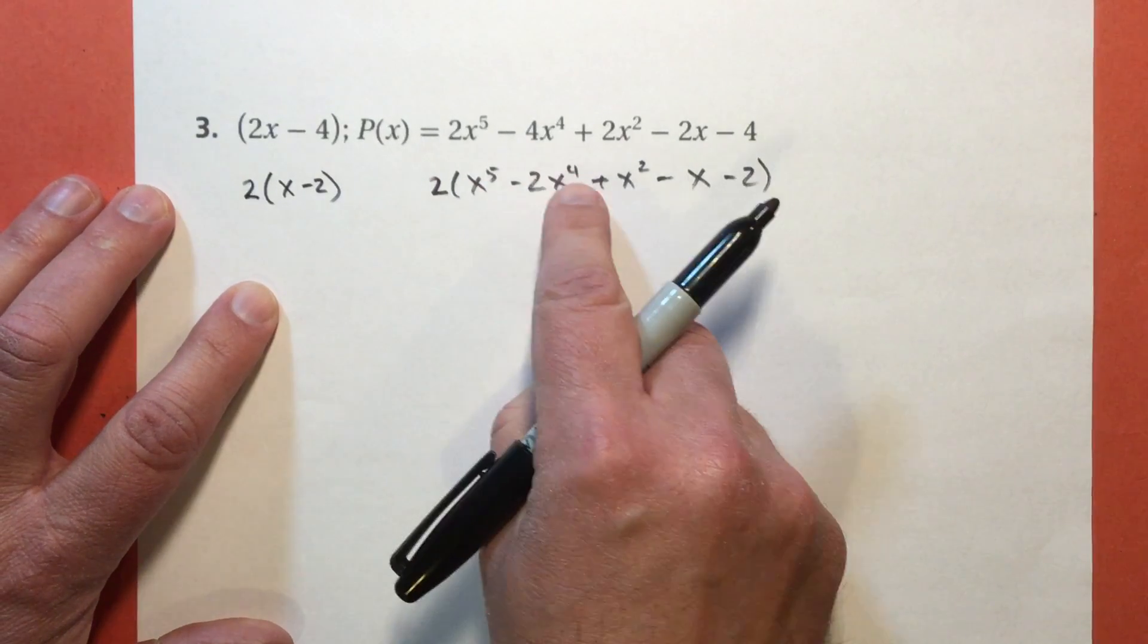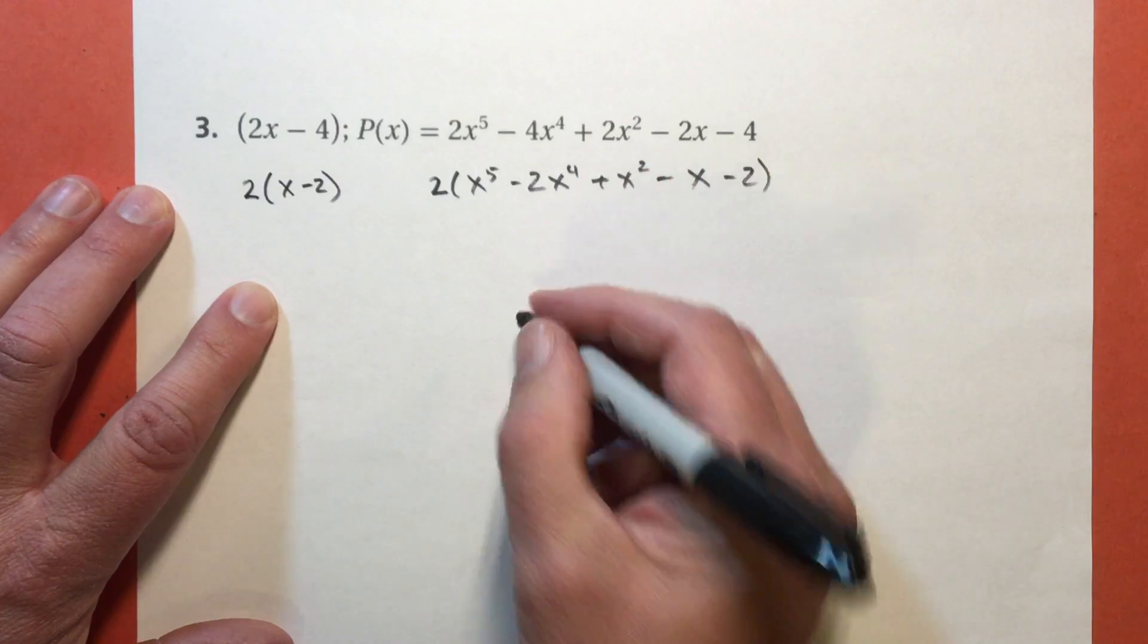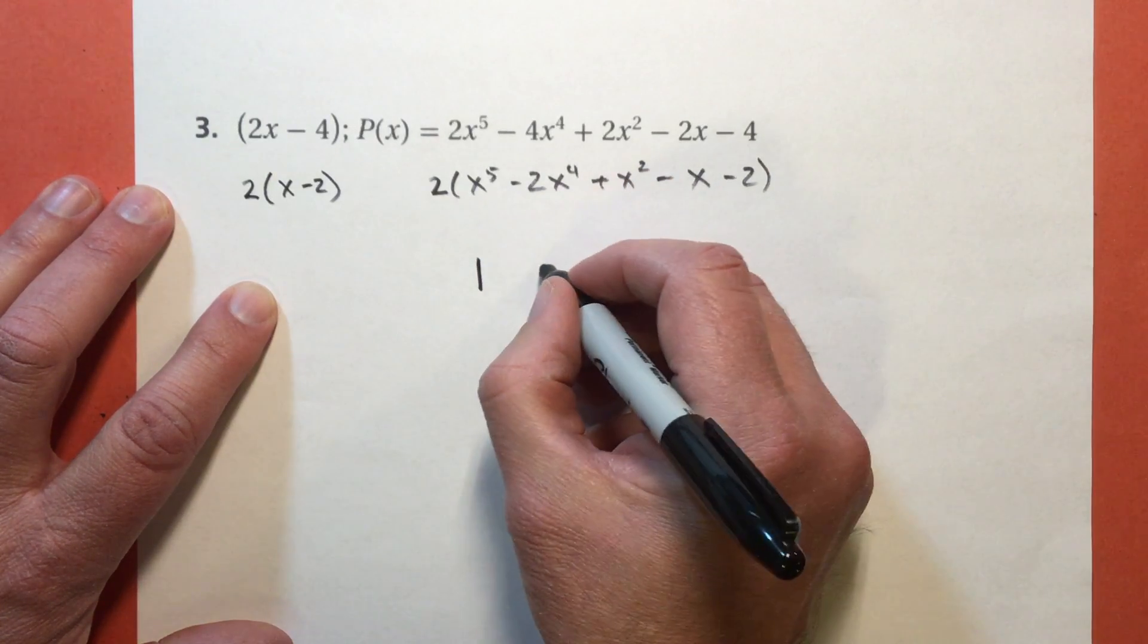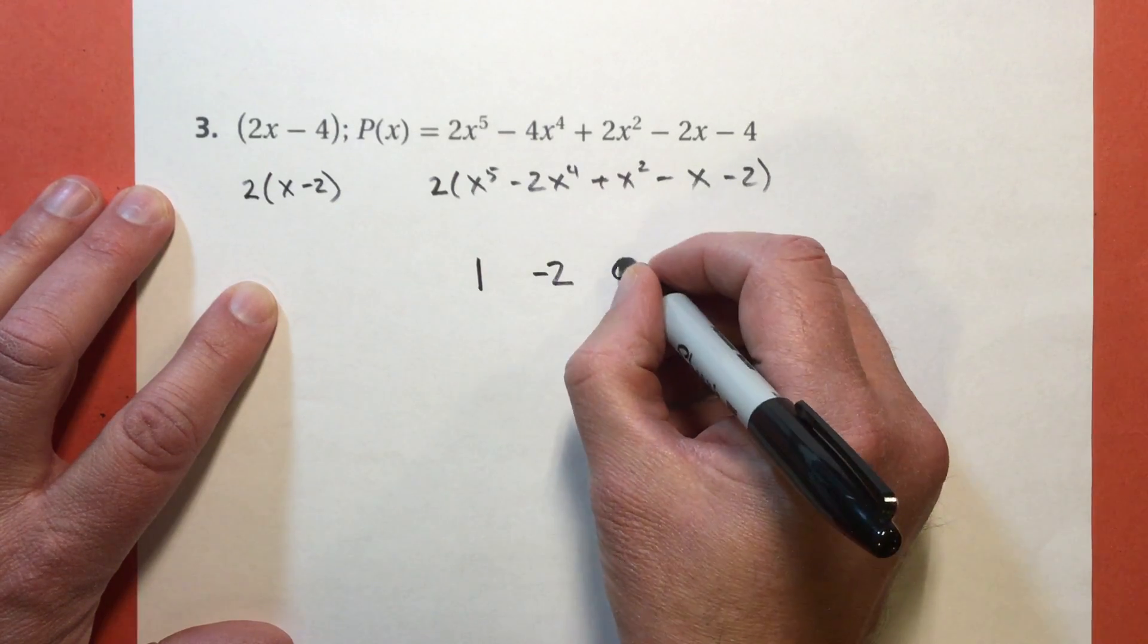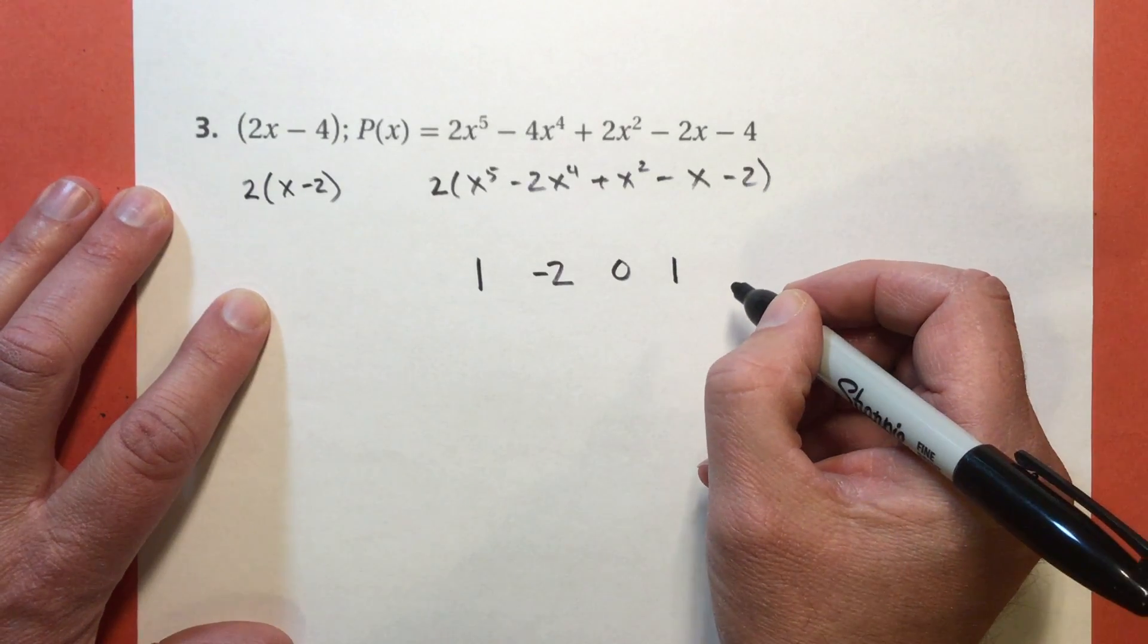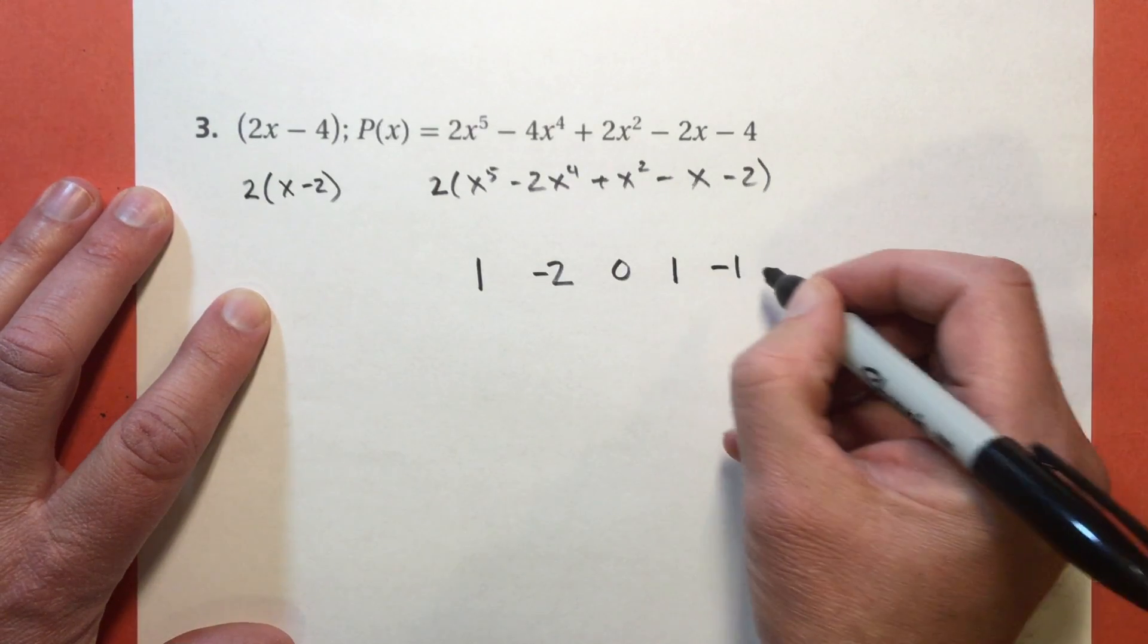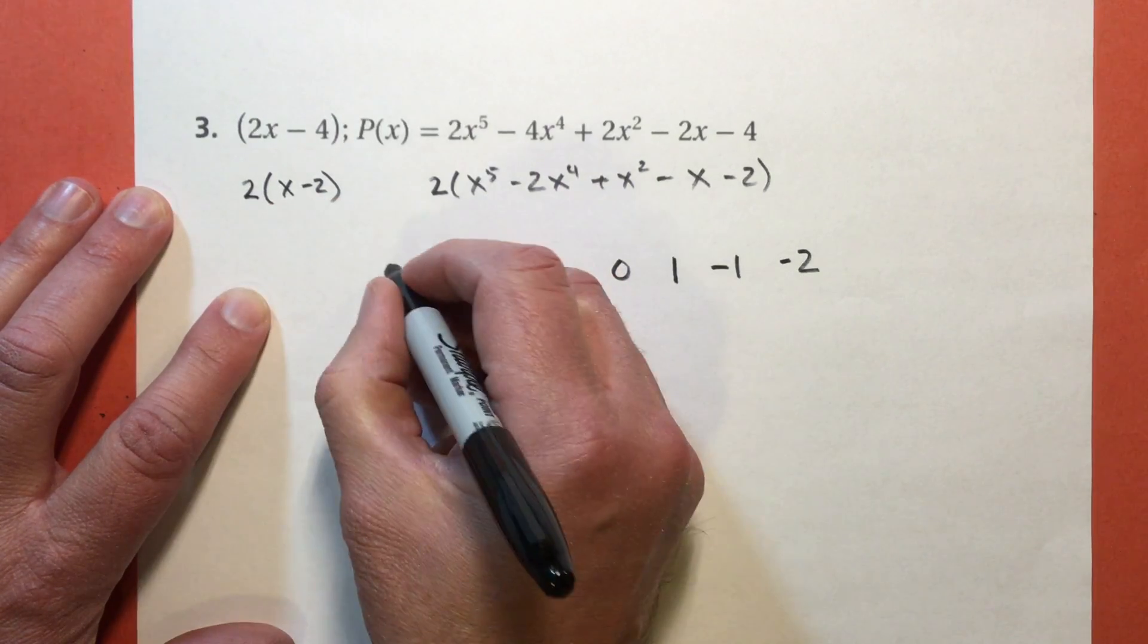So 5, 4, I don't have any x to the 3, I have to remember that, 2, 1. 1x to the 5th, negative 2x to the 4th, 0x to the 3rd power, 1x to the 2nd power, negative 1x and negative 2. Over here I'm going to use 2.